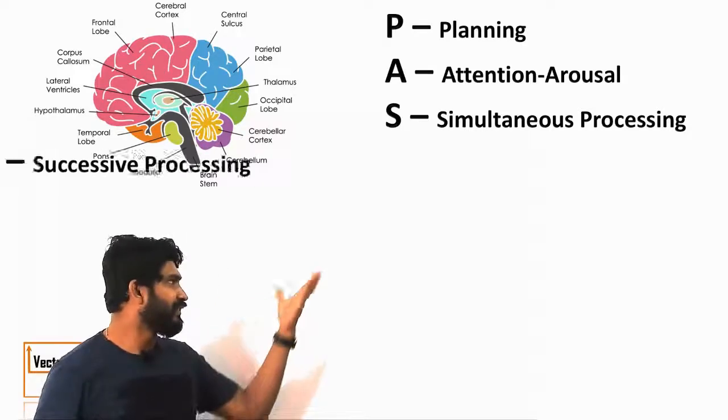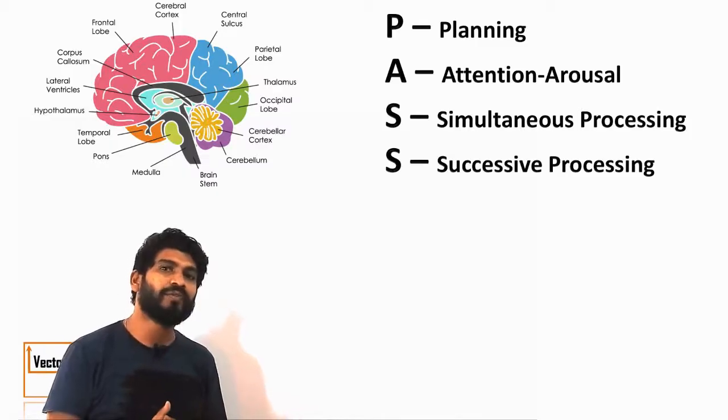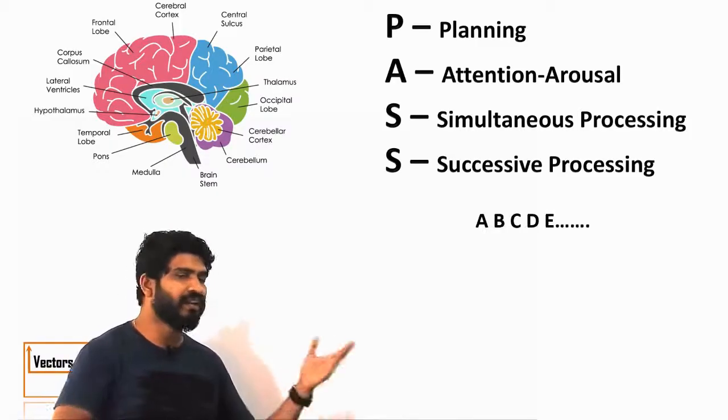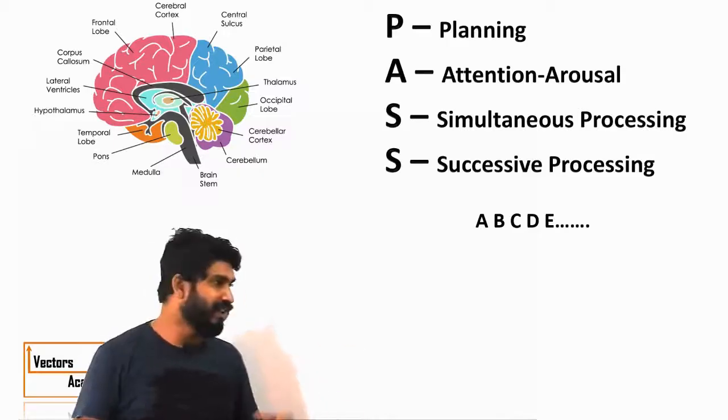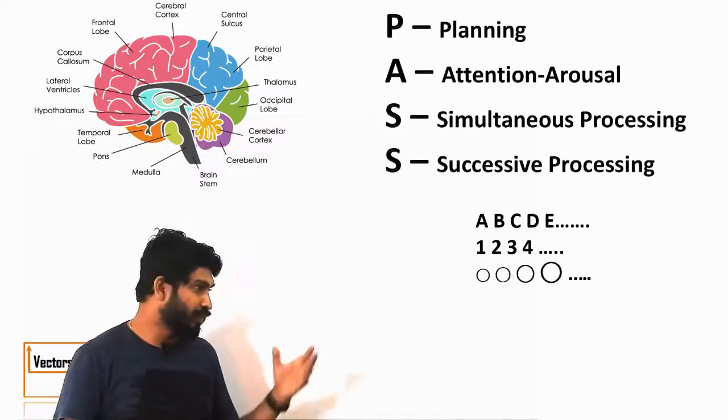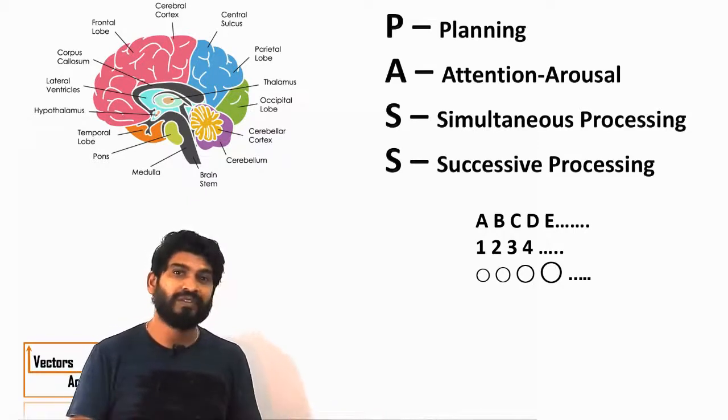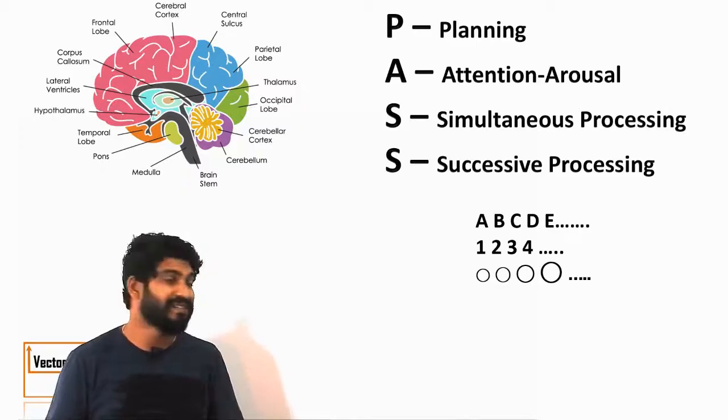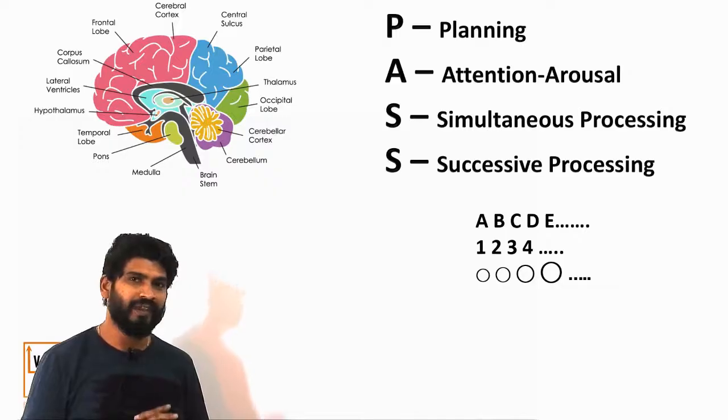And the last one is of course the successive processing. Successive means the arrangement of objects in a particular order. Suppose there are letters arrangement in alphabetical order, that ability is the successive ability or I can say arrangement of numbers in ascending order, descending order, arrangement of objects in increasing or decreasing size or whatever the rule we state. So that is done by this type of ability and this type of ability is basically done by the frontal and the temporal lobe of the brain.